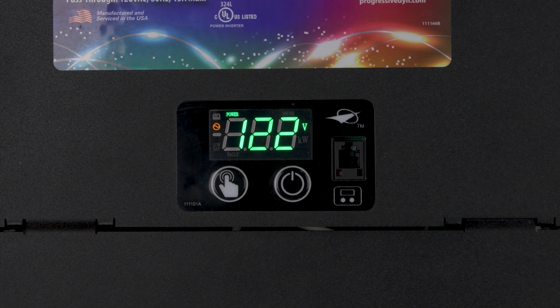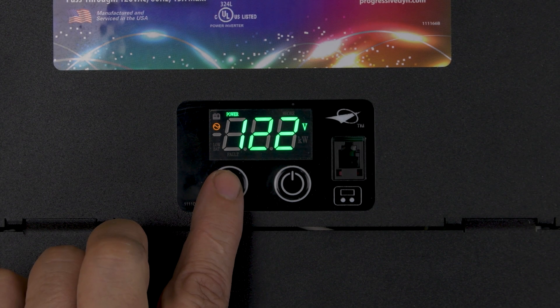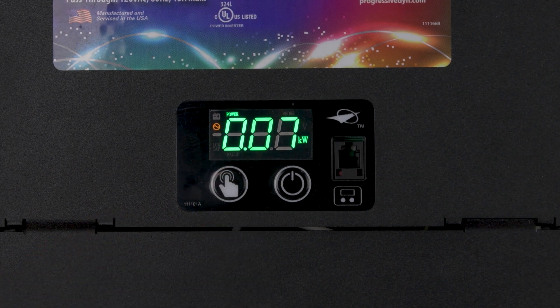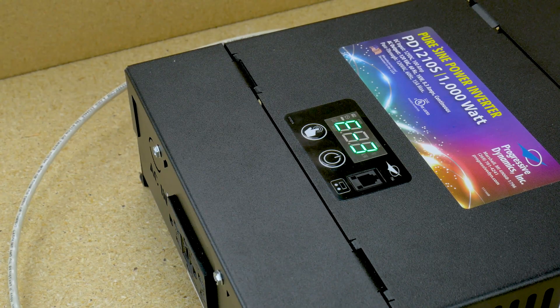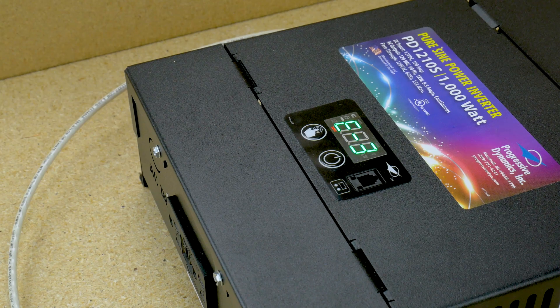There is a display panel on the inverter to show the battery voltage and power output. When not functioning properly, error codes are also displayed to aid in troubleshooting.